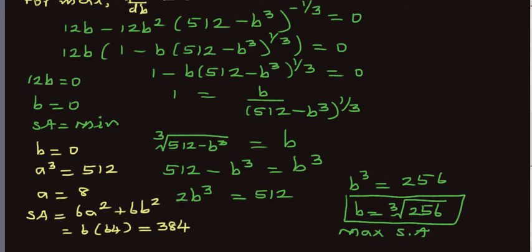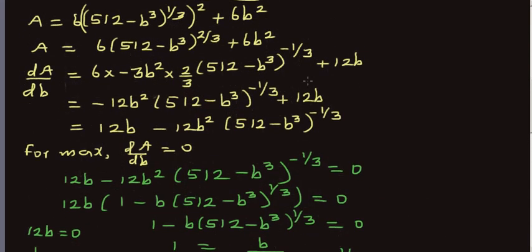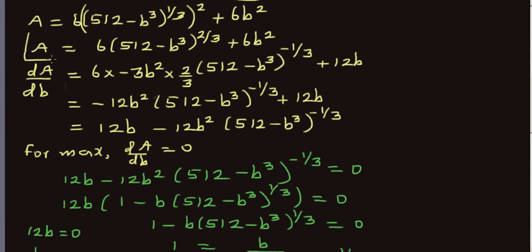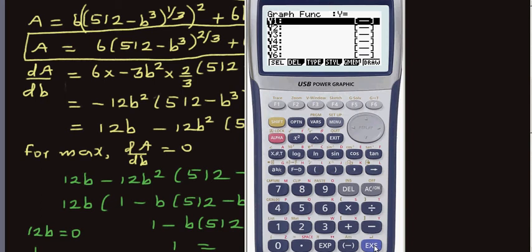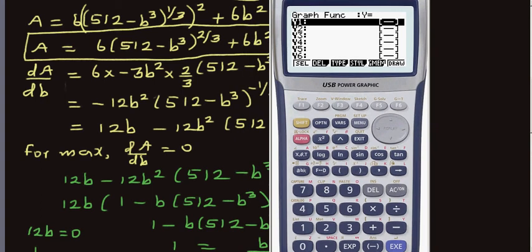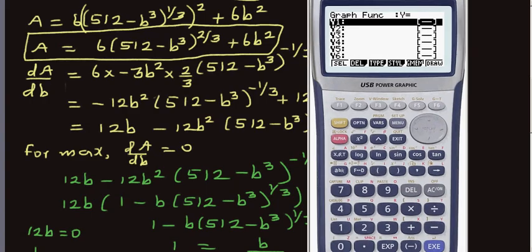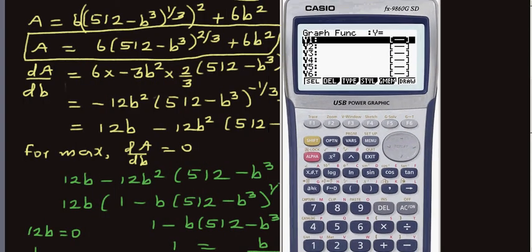Let me explain this graphically using a calculator. Go to graph and type in the function: 6(512 − x³)^(2/3) + 6x². Enter the bracket with 2 divided by 3 as the exponent, then plus 6x².